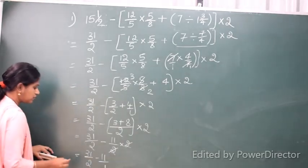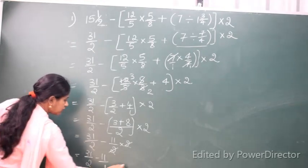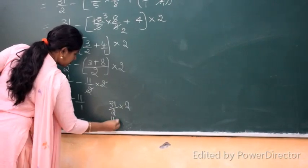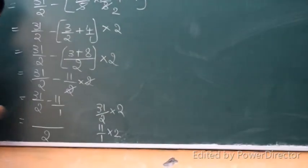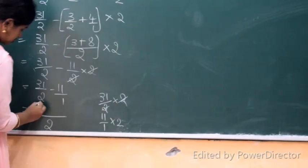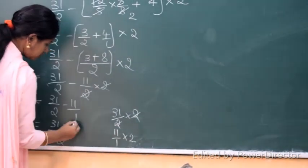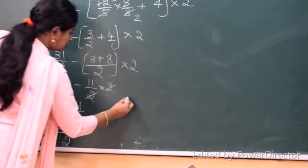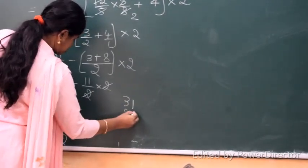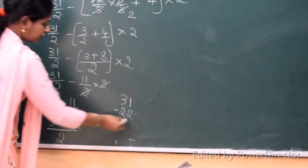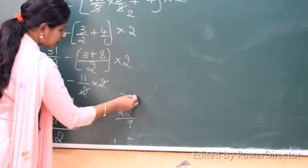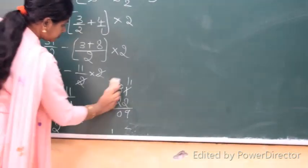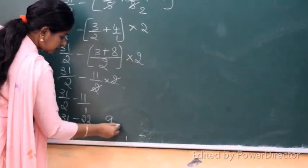31 minus 22 equals 9, over 2. So the answer is 9/2.